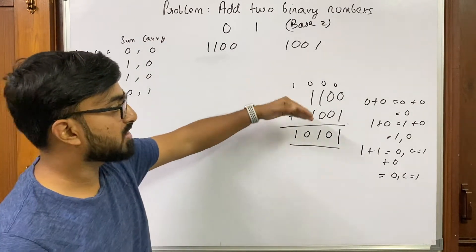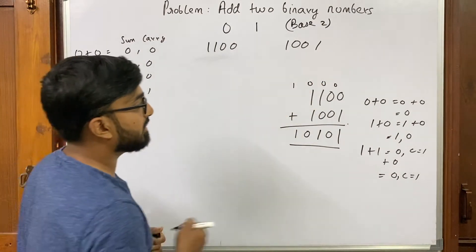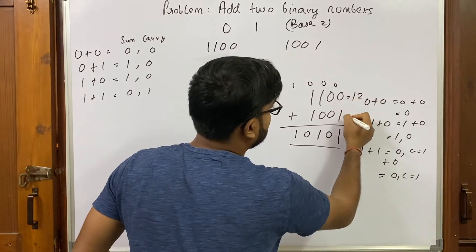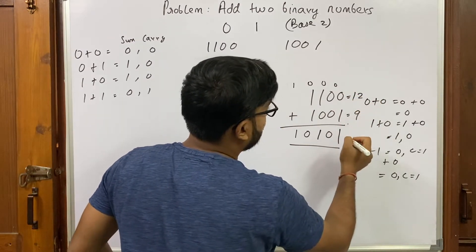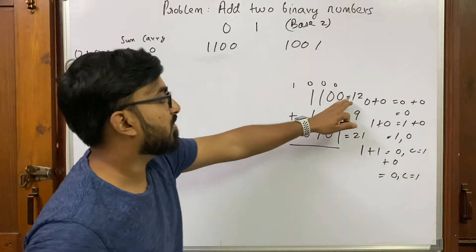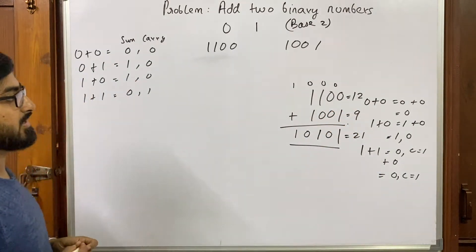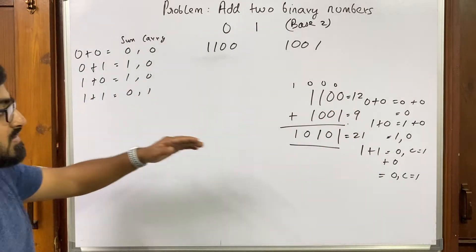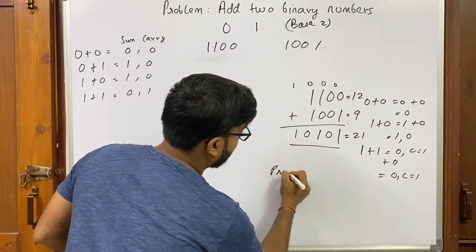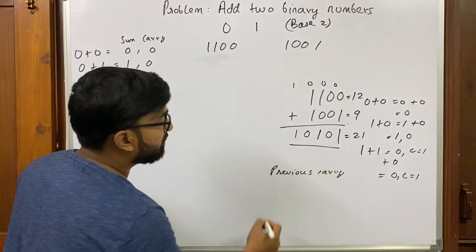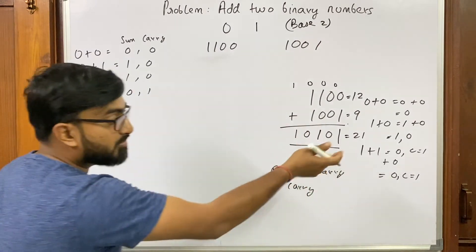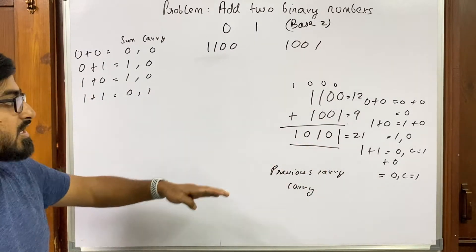Let's convert to decimal to verify: 1100 is 12, 1001 is 9, and 12 plus 9 is 21. So our addition is correct. What we saw is we also have to keep track of the carry from the previous step.